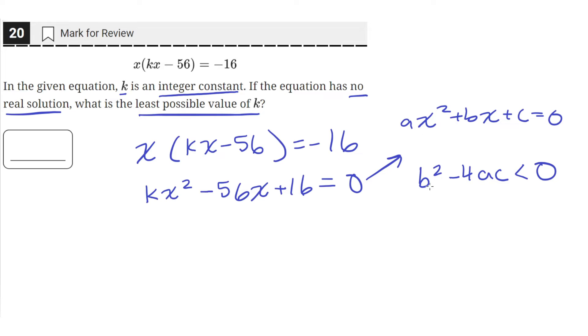The b term here is the coefficient of the x term, so in this case it's negative 56. So it'll be negative 56 squared, and then minus 4 times a, which is the coefficient of the x squared term, and that's k. And then c is the constant, so that's 16. And that has to be less than zero.